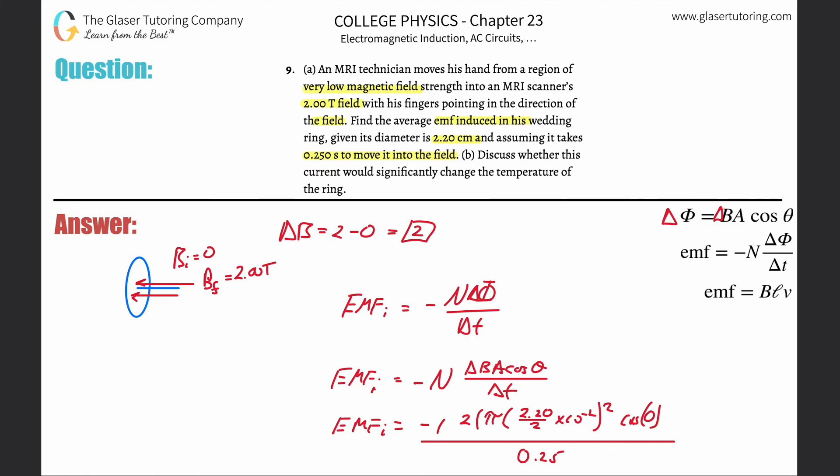All right, now take out the calculator, plug it in. So 2 times π times the radius now, 2.2 over 2, which is just 1.1, times 10 to the negative 2, squared. The cosine is 1, then divide it by 0.25.